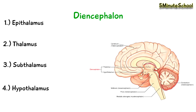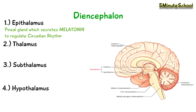The epithalamus of the diencephalon contains the pineal gland, which releases melatonin to help with circadian rhythm, or your sleeping pattern.